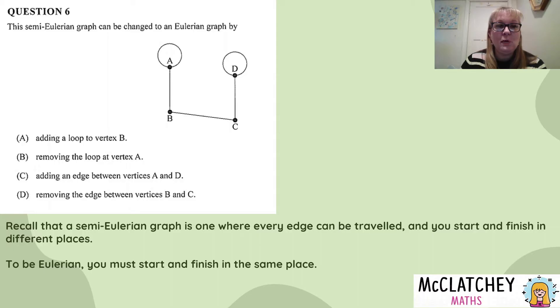If we add the edge between vertices A and D, which means we put a little edge in here, means we're going to start at A, come down to B, C, D, round the loop, and then back to A, which is exactly what we want. C is our correct answer.